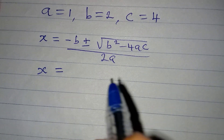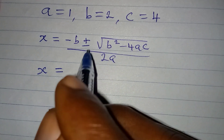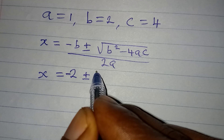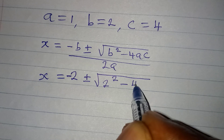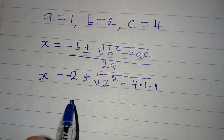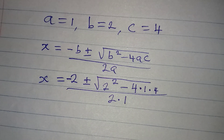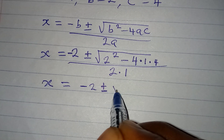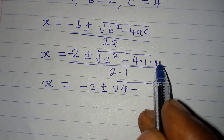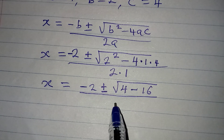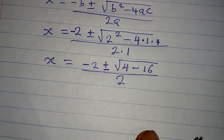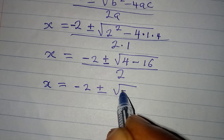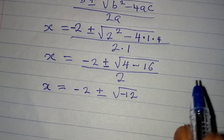Let's put in the values. Our b is 2, so we have negative 2 plus or minus; b squared is 2 squared, minus 4 times a which is 1, times c which is 4, all over 2 times 1. So x = (−2 ± √(4 − 16)) / 2, giving x = (−2 ± √(−12)) / 2.